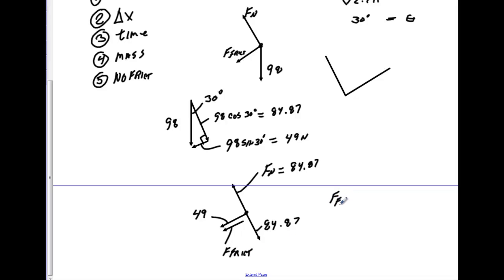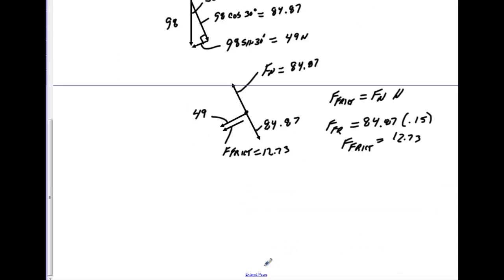And now we'll go ahead and calculate that. We know by definition friction is equal to normal force times mu. Our normal force is going to be 84.87. We're going to multiply that by 0.15. That will give us our frictional force. And when we do that, we will find out our frictional force is equal to 12.73. So we'll put that in there. Now, all you have to do is sum forces in the X prime direction and set equal to mass times acceleration.